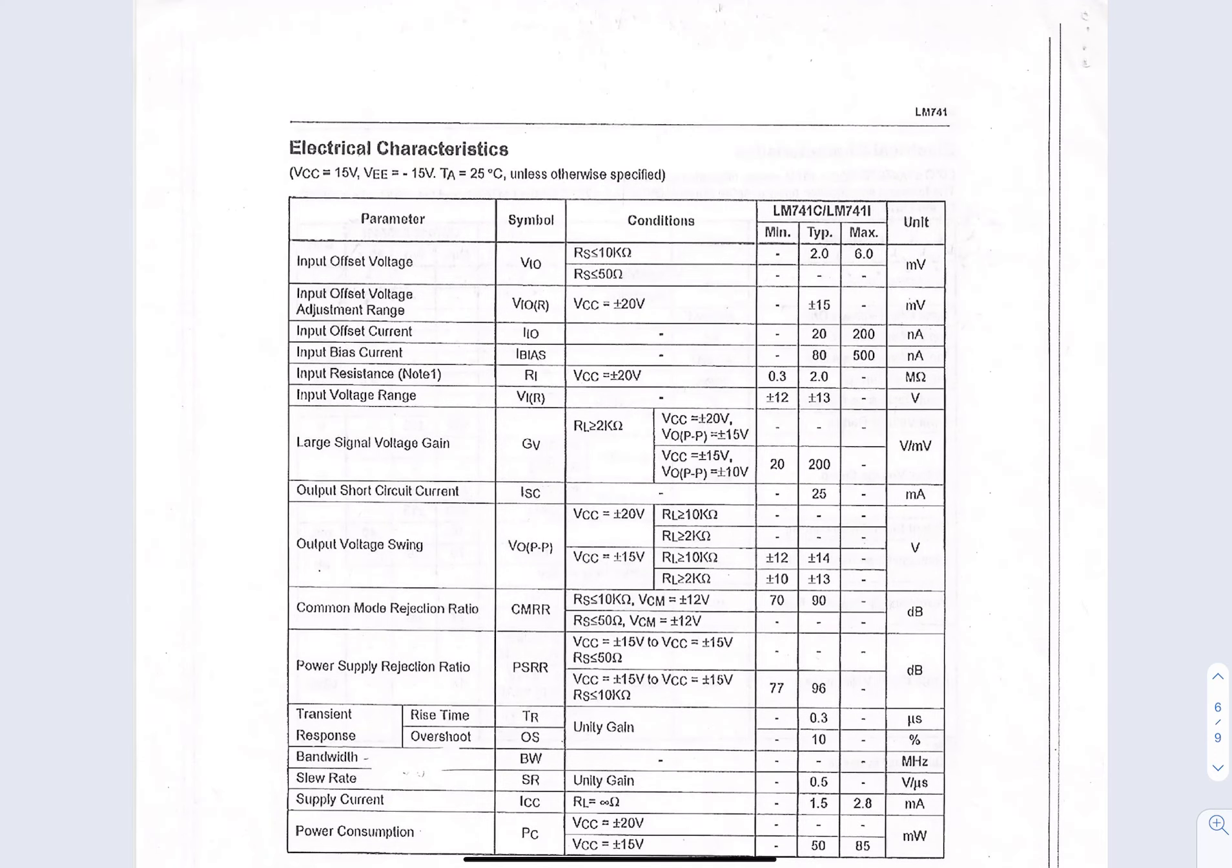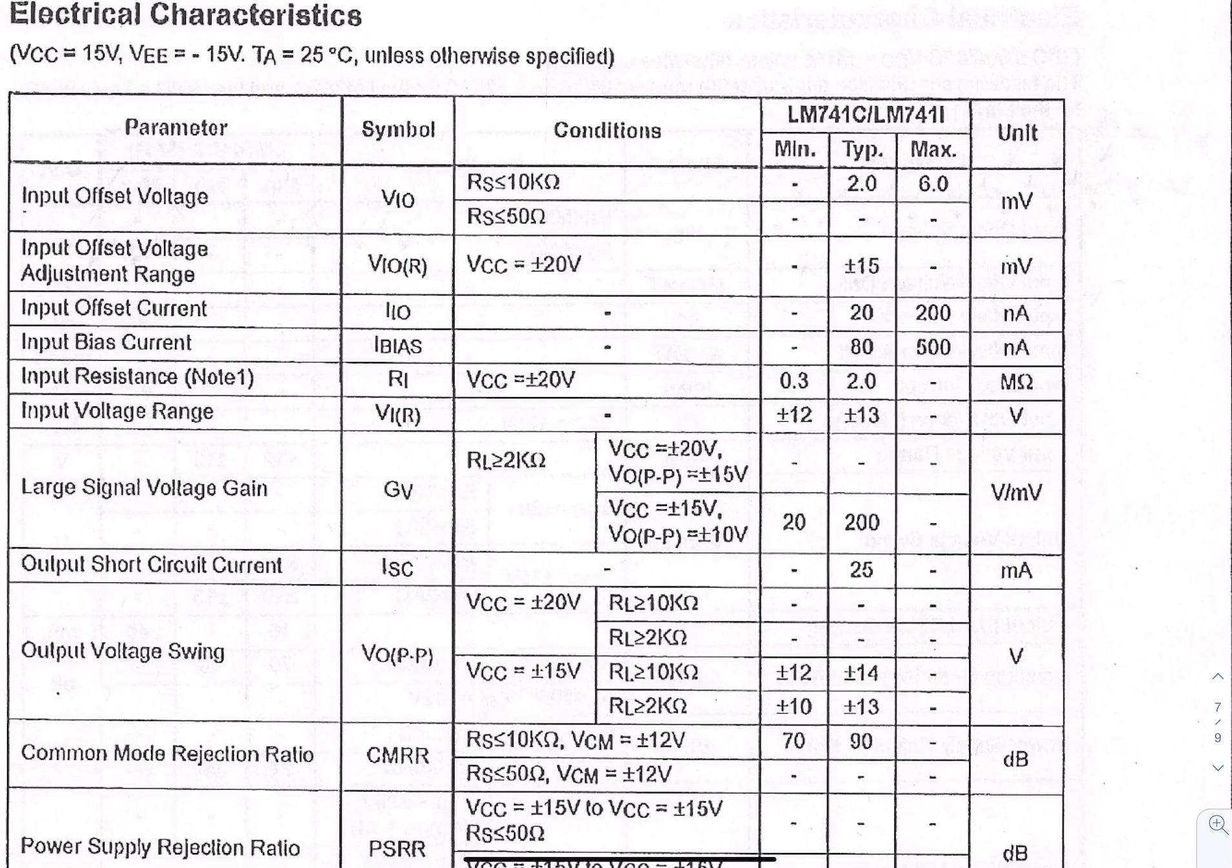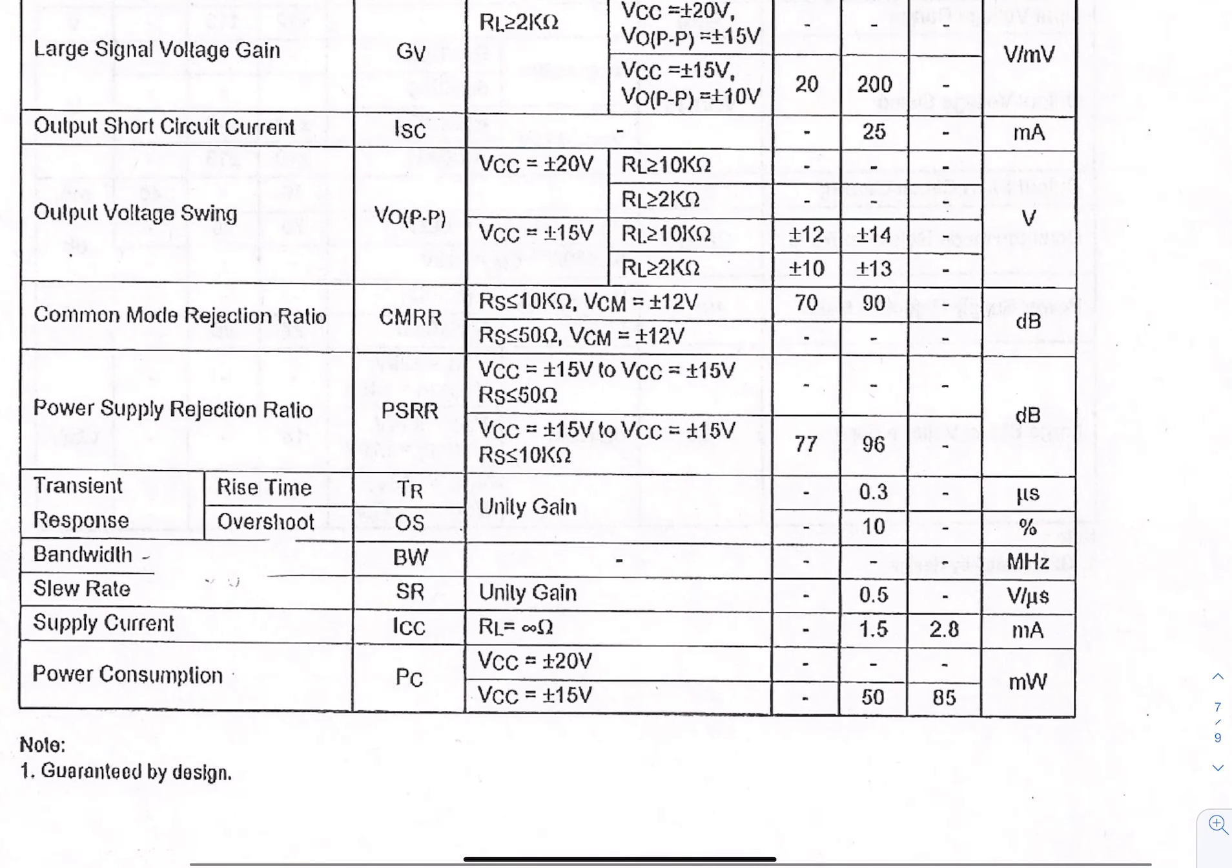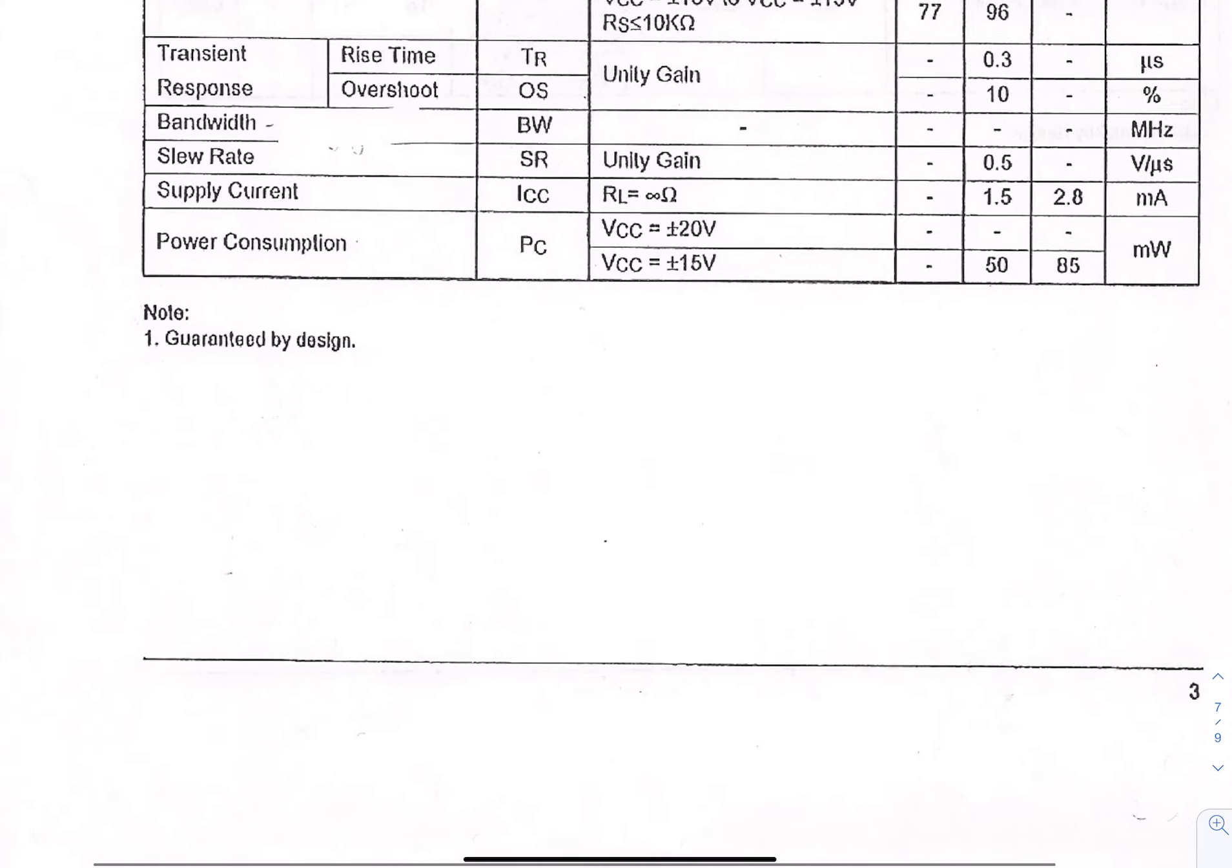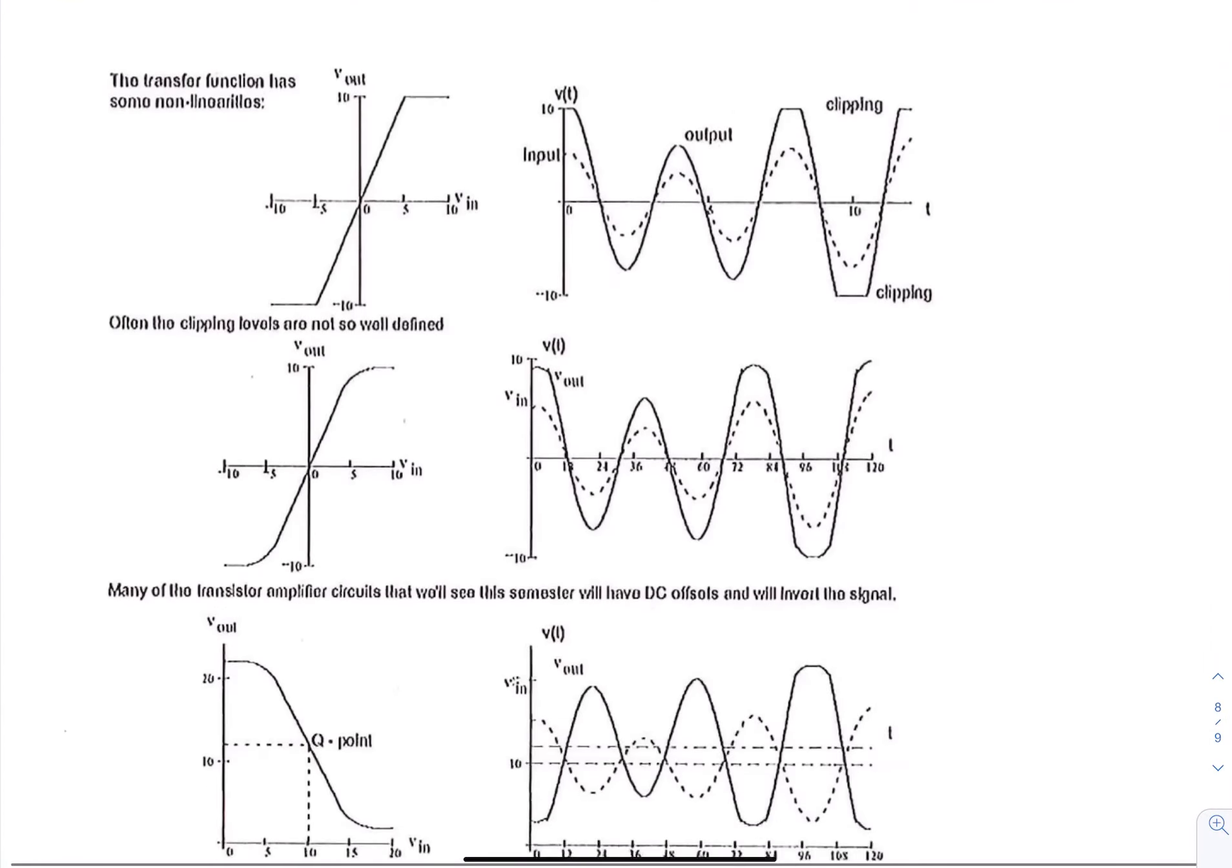I wanted to just show you some of these data sheets. Again, like here is your input offset voltage. And again, you have a typical value and a max value. Looking at the worst case, you would then pick this six millivolts as your worst case scenario for this. So anyway, these have ranges and I just wanted to point those out on the data sheet.